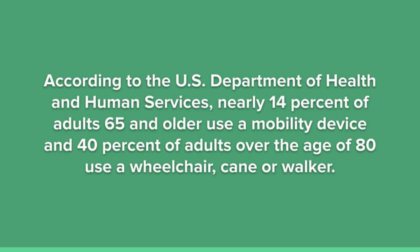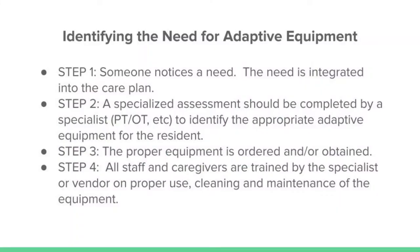These are activities that most of us take for granted, but when we get older many of us will need adaptive equipment to help us function in our daily lives. People in assisted living or long-term care are there because they need the extra help. So as people lose function, the need for adaptive equipment needs to be identified and integrated into the resident's care plan.